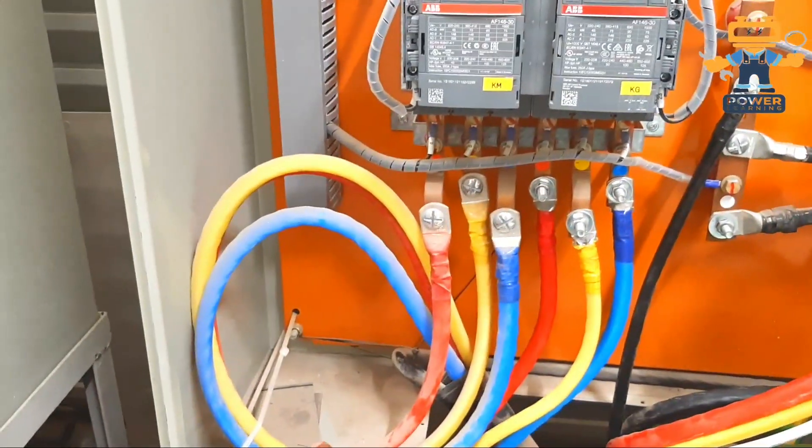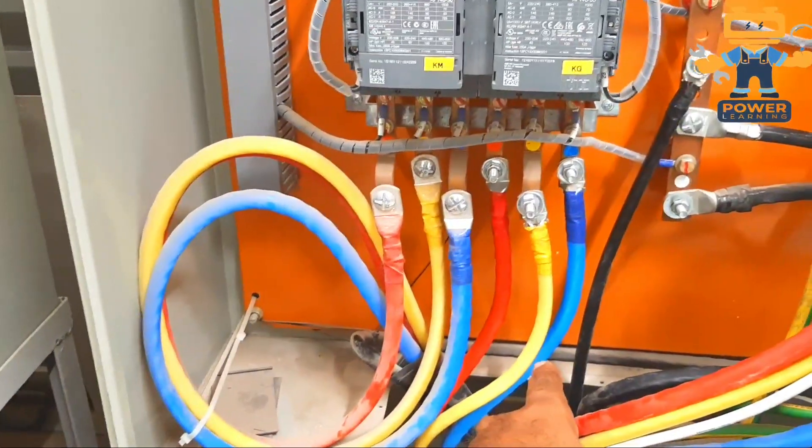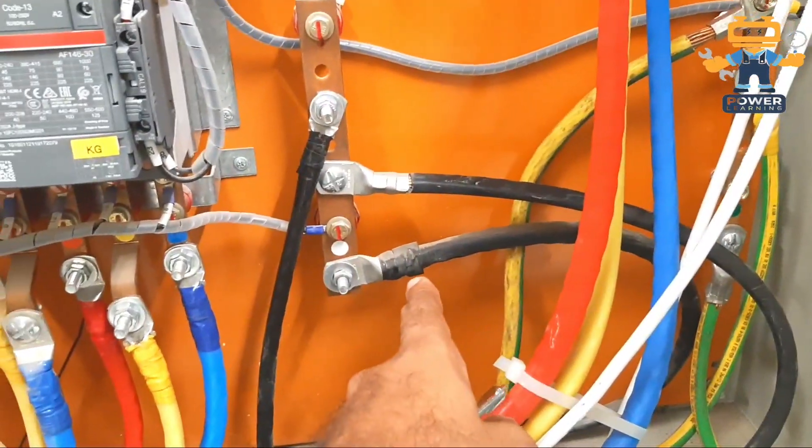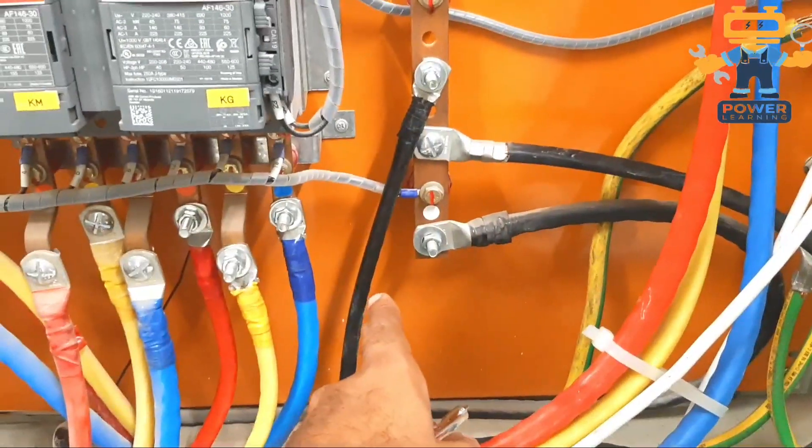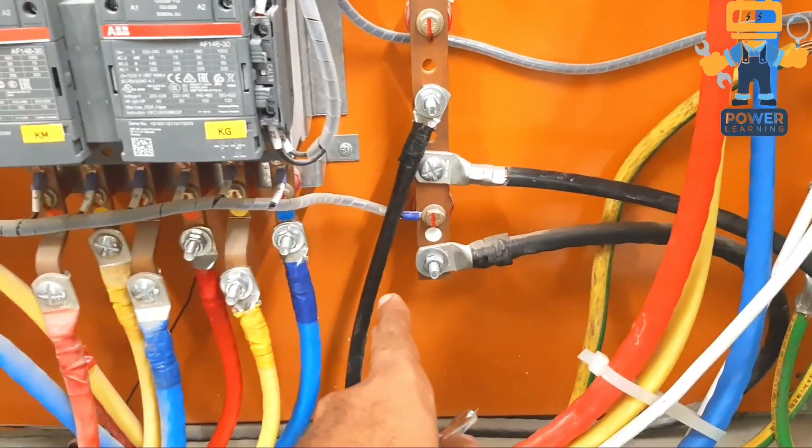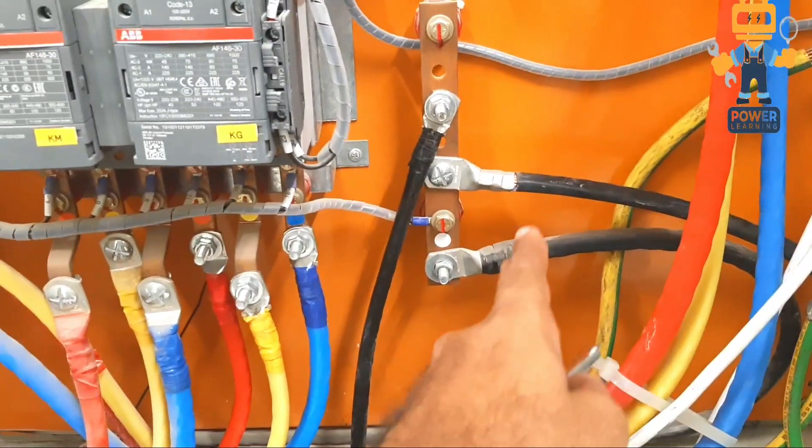This is having mains power and this cable is for generator. After that we have common neutral bus bar here. Three neutral cables are connected here: one for generator, one for mains, and one for load. Earthing cable is connected here.